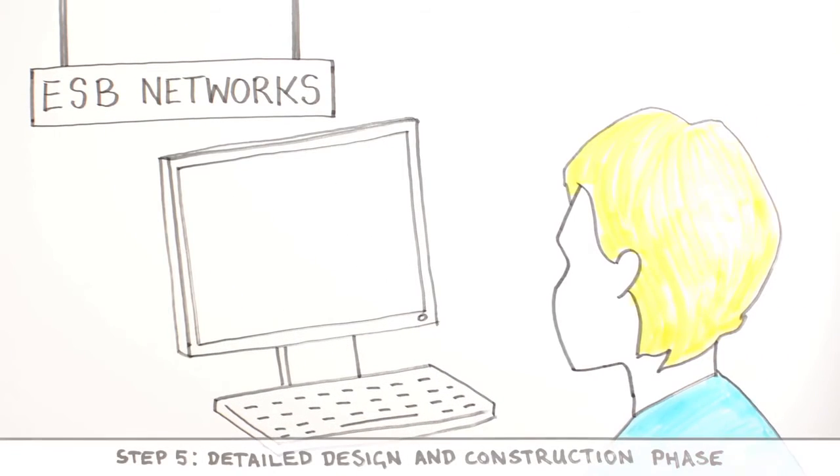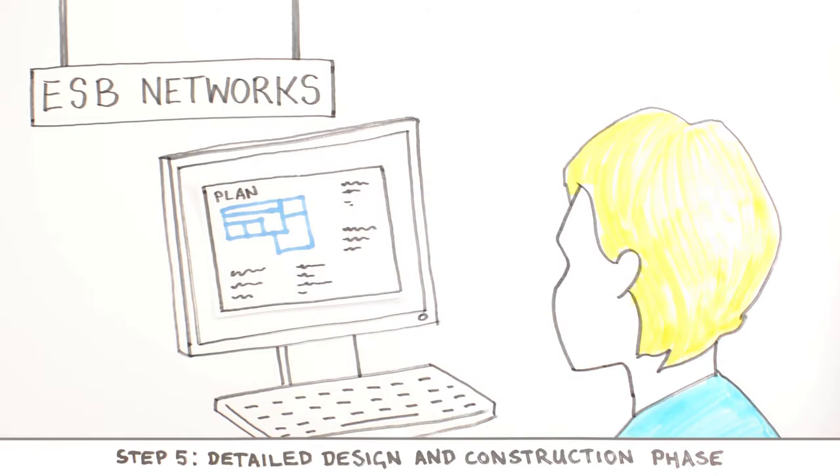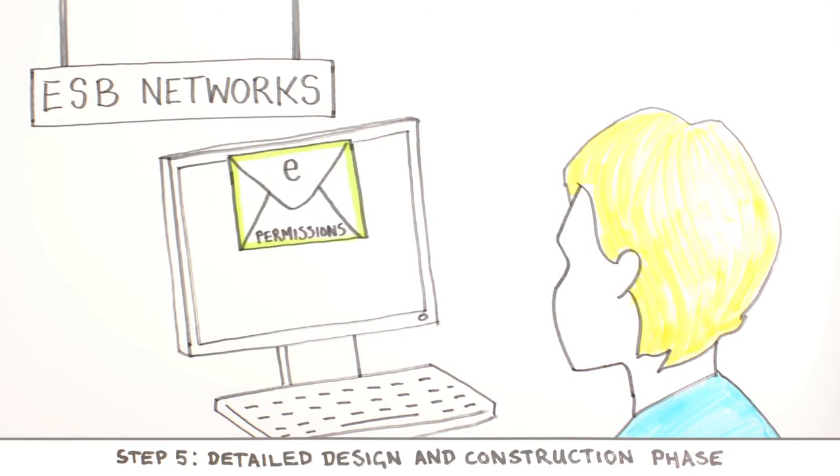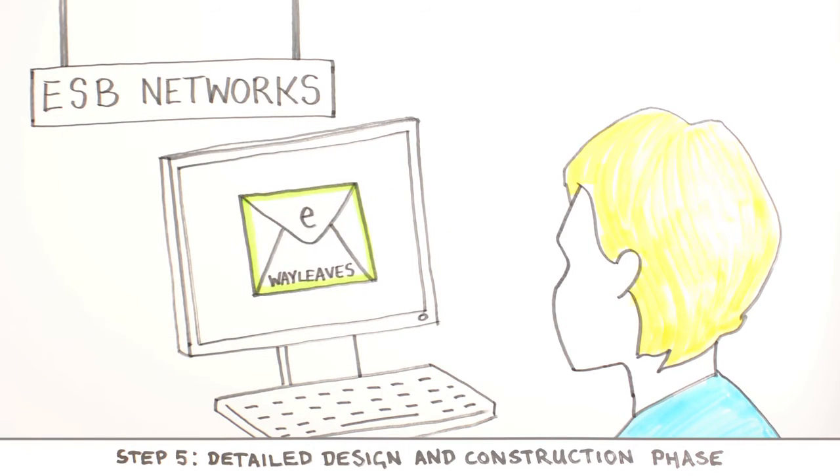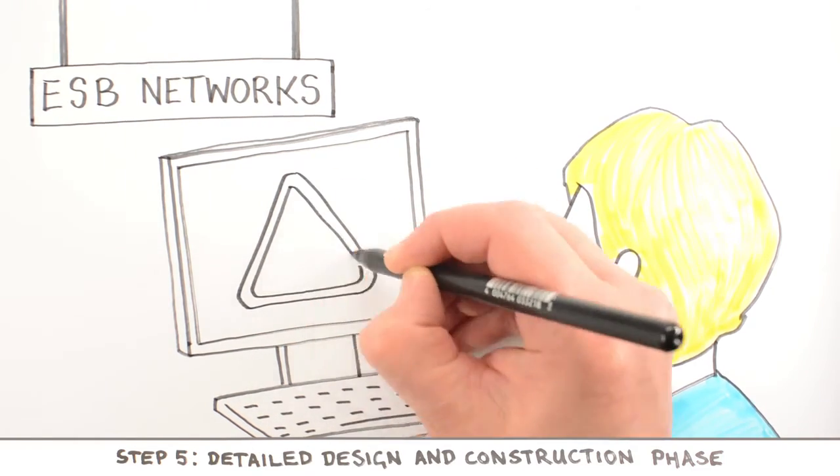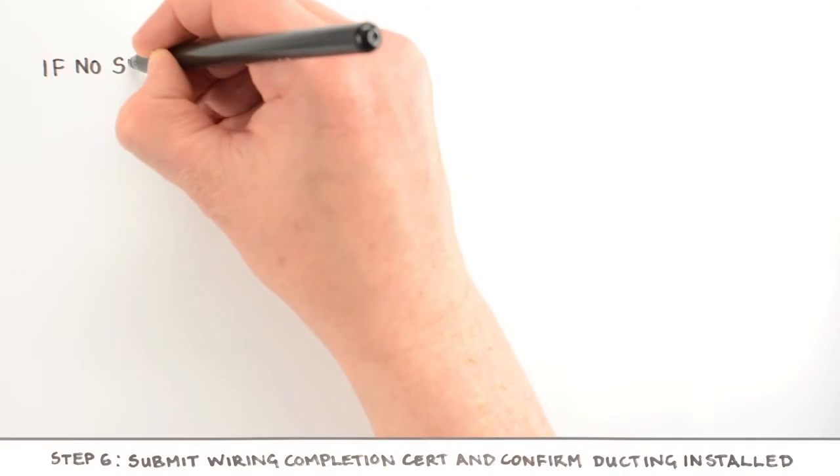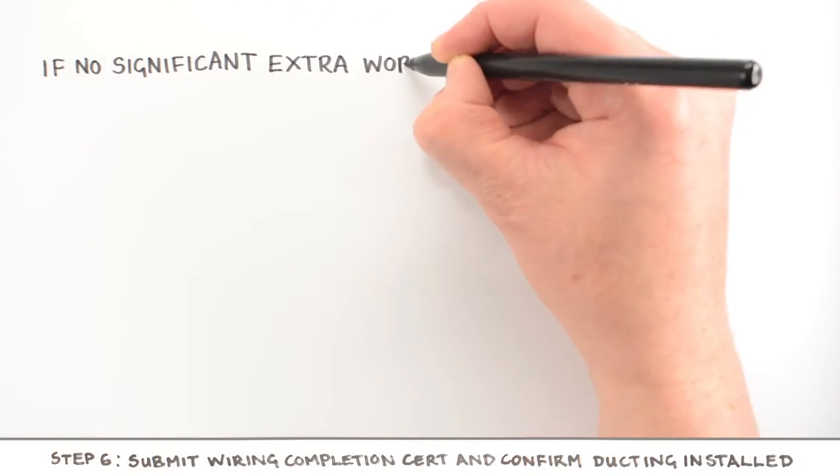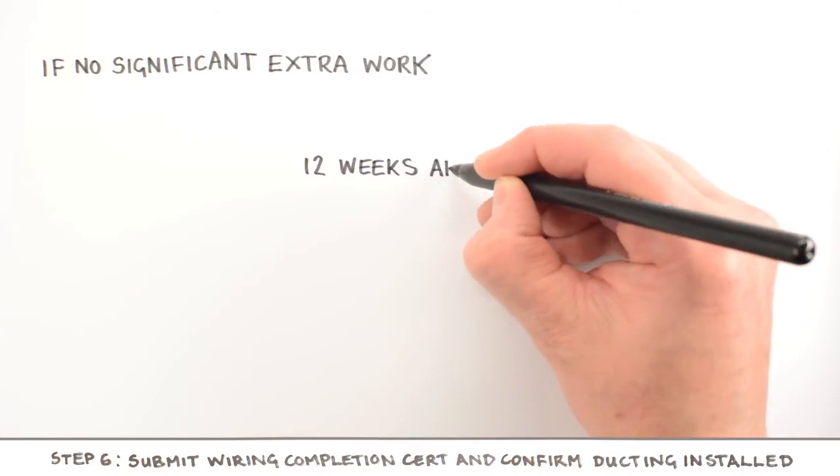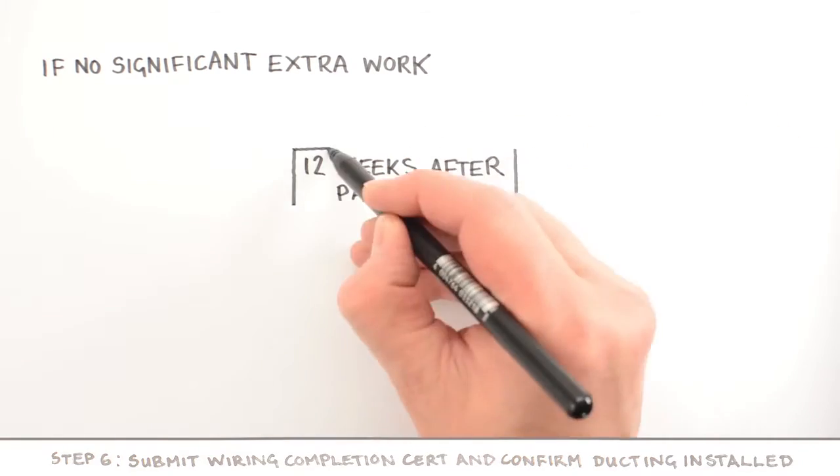Once payment is received, a detailed design will be carried out and the necessary permissions and wayleaves will be sought from landowners to allow construction of your connection to commence. If no significant extra work is required, your connection could be complete within 12 weeks after payment has been received.